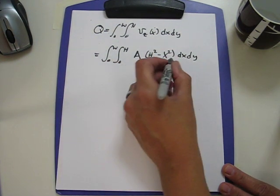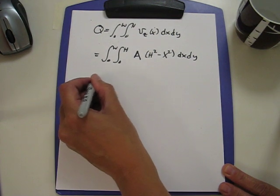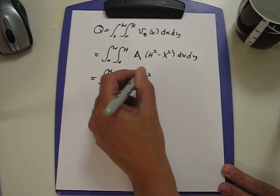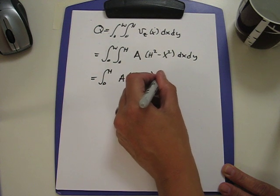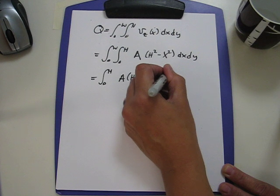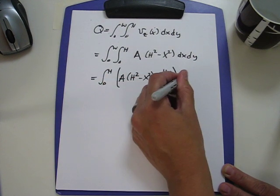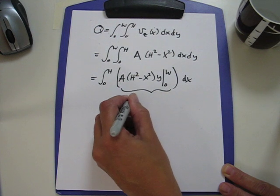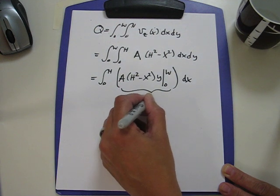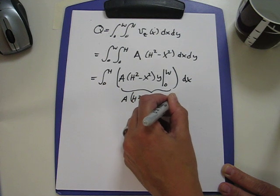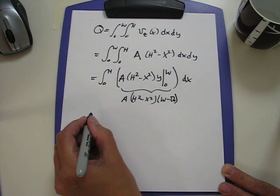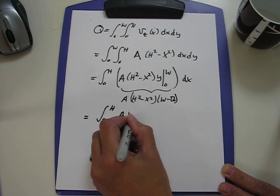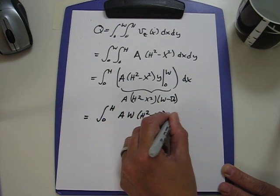We first carry out the y integration. Nothing is a function of y, so we get A h squared minus x squared times y, evaluated from 0 to w. This inside quantity becomes A h squared minus x squared times w minus 0.